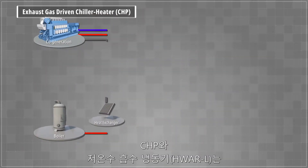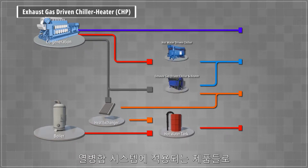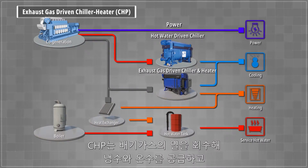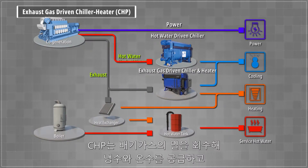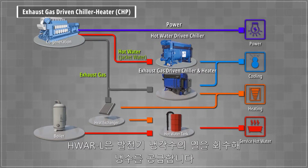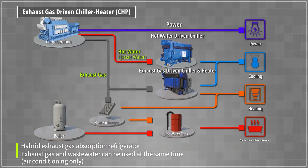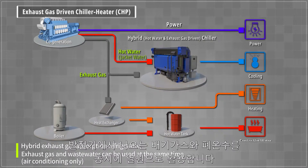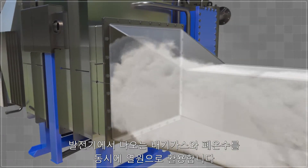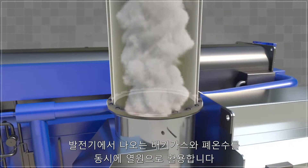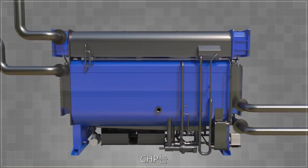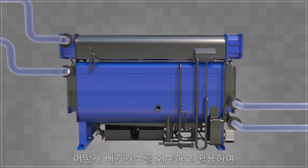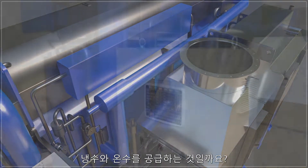CHP and HWARL are used in CHP facilities. CHP utilizes exhaust gas waste heat to provide chilled and hot water. HWARL utilizes engine jacket water to provide chilled water. The CHPL model, a hybrid type absorption chiller, can use a combination of engine exhaust gas and cooling water as a heat source. The CHP absorption system recovers exhaust gas and provides cooling and heating.